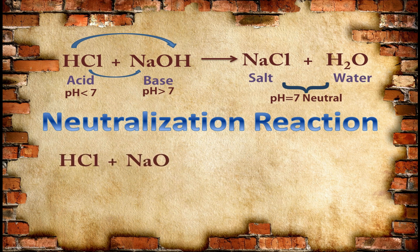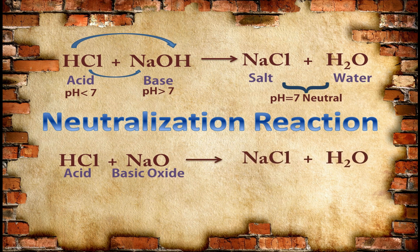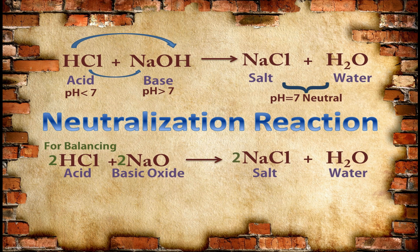Let's see another example — acid with metallic oxide — because metallic oxides are bases in nature. So whether an acid reacts with sodium hydroxide or sodium oxide, the same reaction takes place, because sodium oxide is also considered a base. During the reaction, NaCl and water will form as products. For balancing, we write 2 with HCl, 2 with sodium oxide, and 2 with NaCl. Now this equation is balanced.